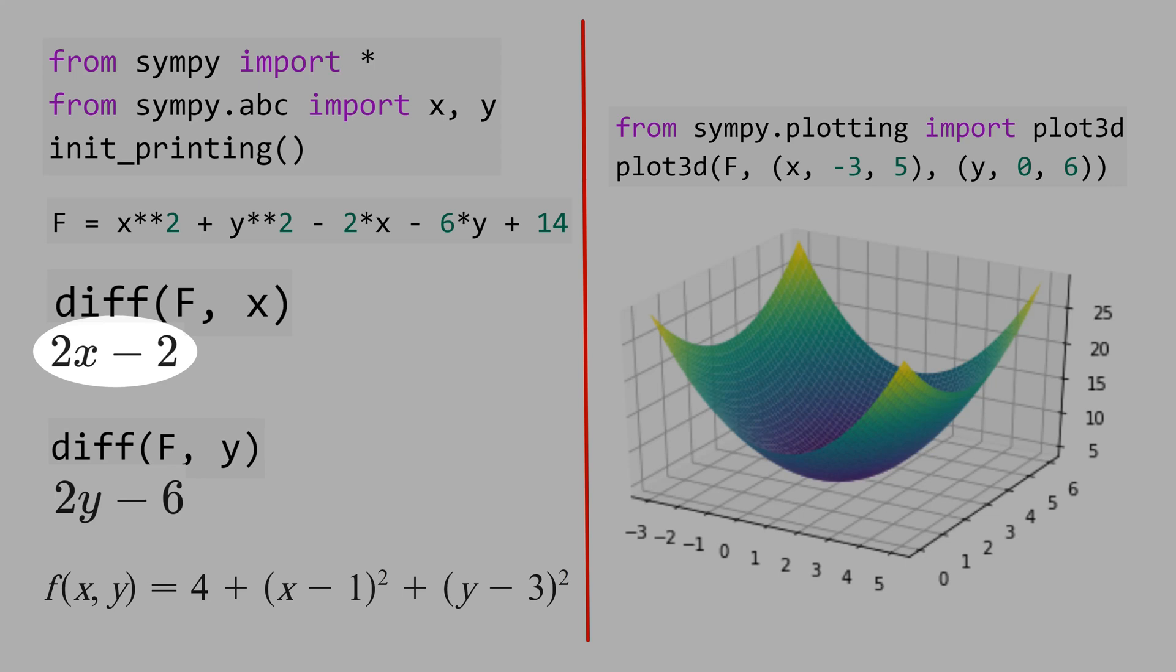That means the derivative equals 0 when x equals 1 and when y equals 3. Therefore, we can write this equation here that is easier to visualize than the initial one.